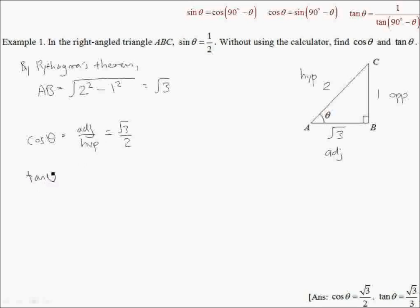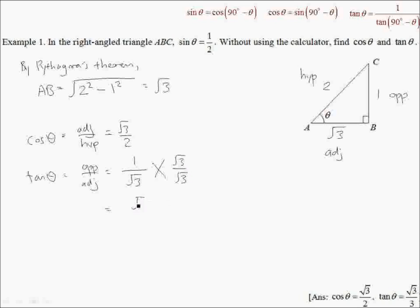Next, tanθ is defined as opposite over adjacent. Since opposite is 1 and adjacent is root 3, tanθ is 1 over root 3. But take note that we are not done yet — we need to rationalize the denominator by multiplying root 3 in the numerator as well as the denominator, and this will just give us root 3 over 3.